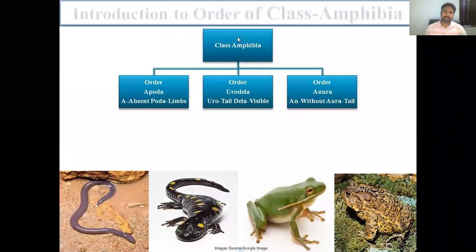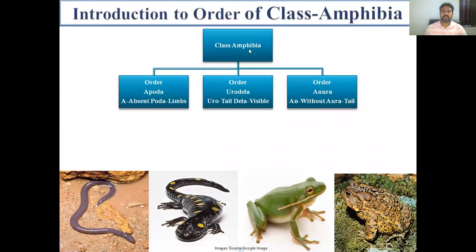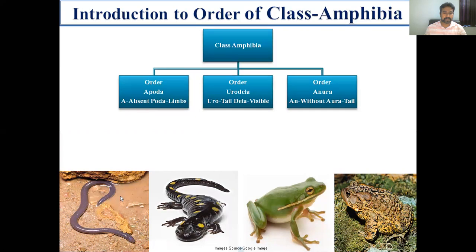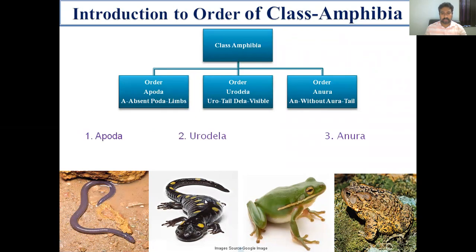As we know, amphibians are the first animals which show transition from aquatic mode of life to terrestrial mode of life. So they show dual life, and they are today represented by three orders: Order Apoda, Order Urodela, and Order Anura.